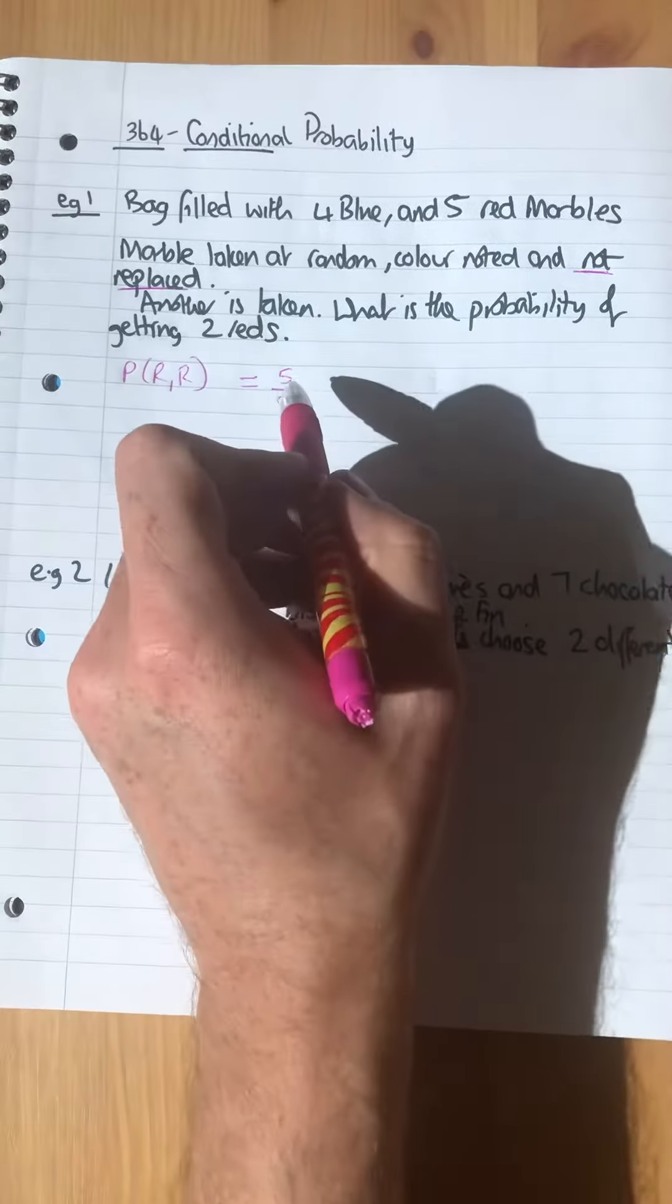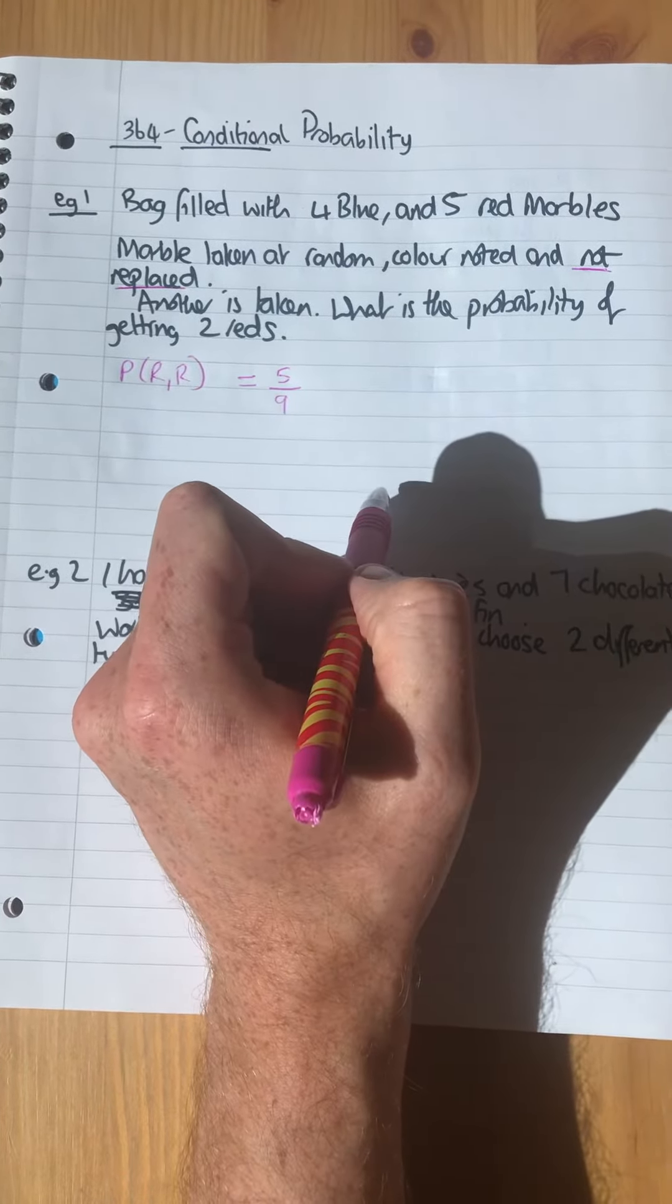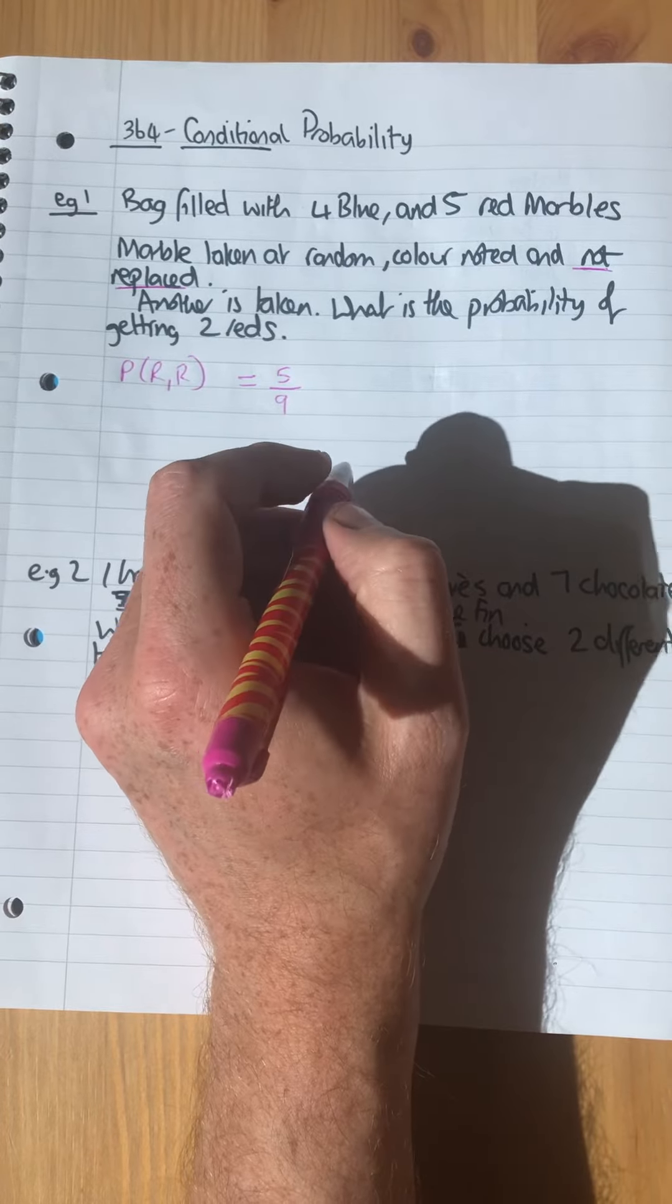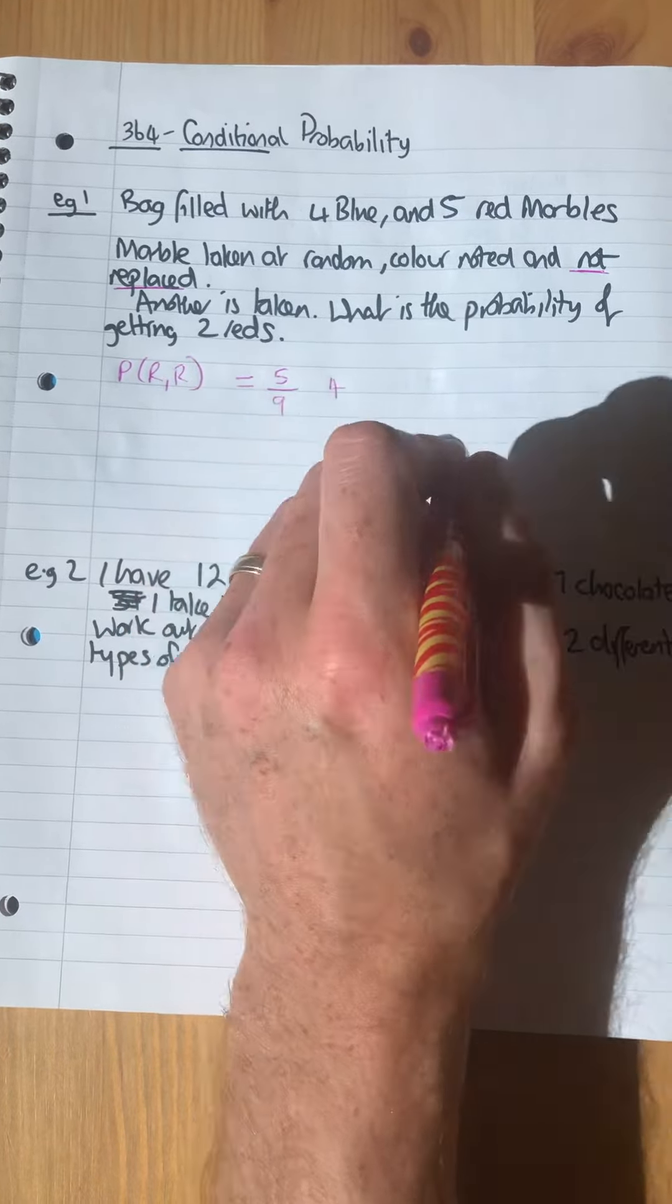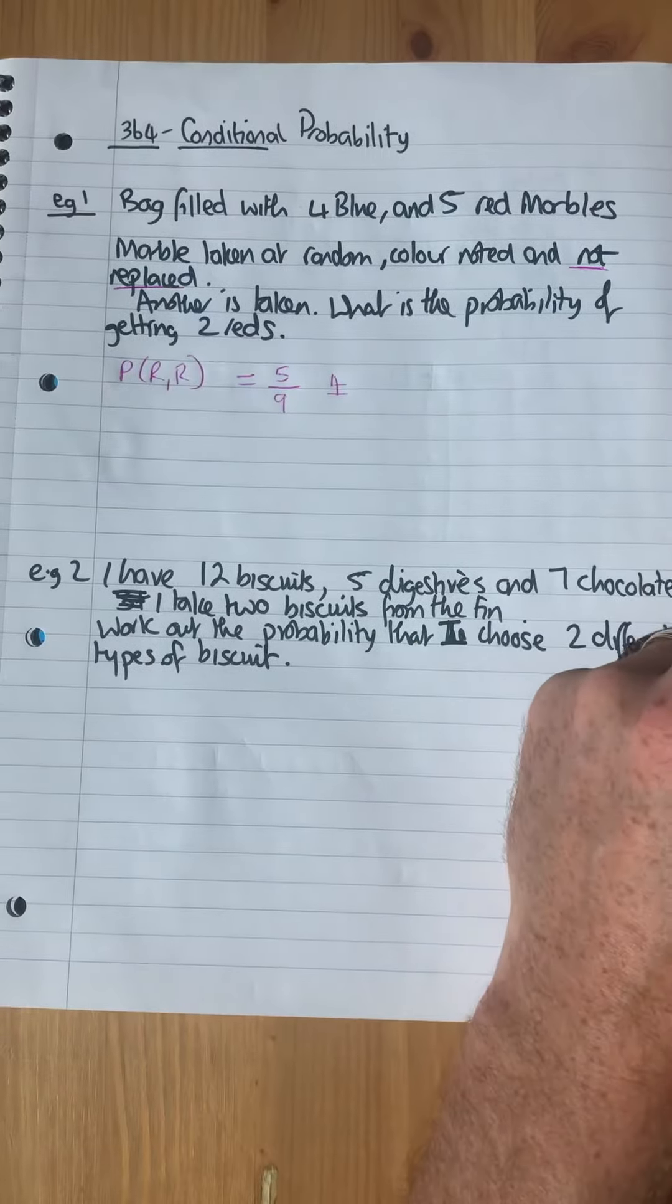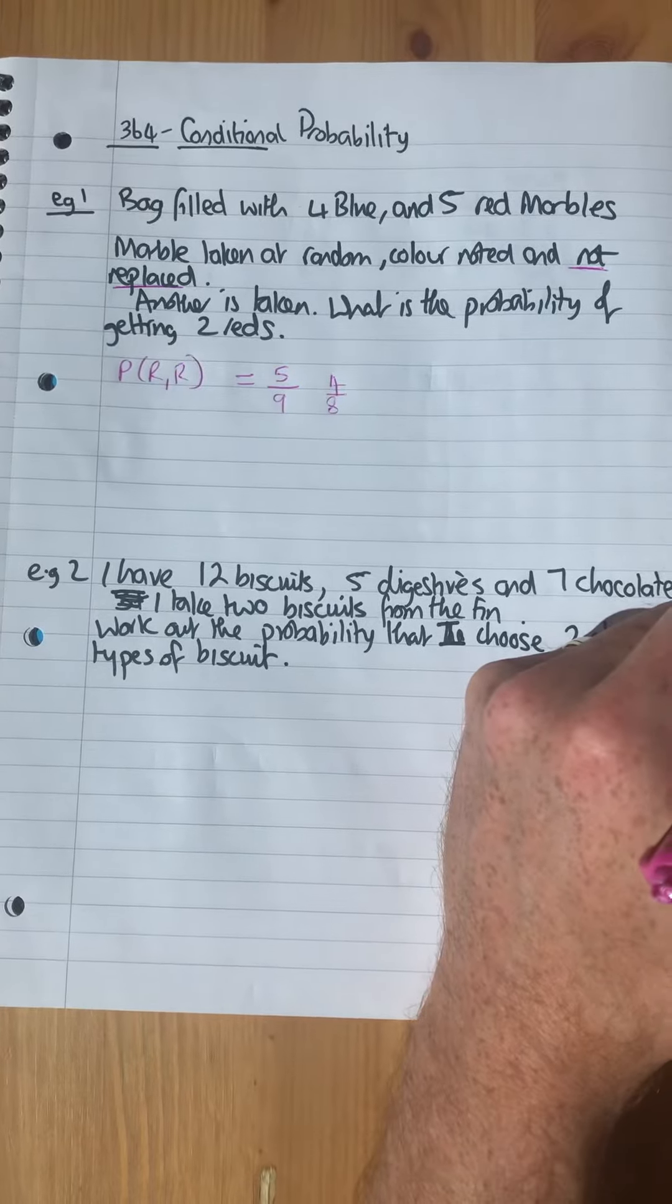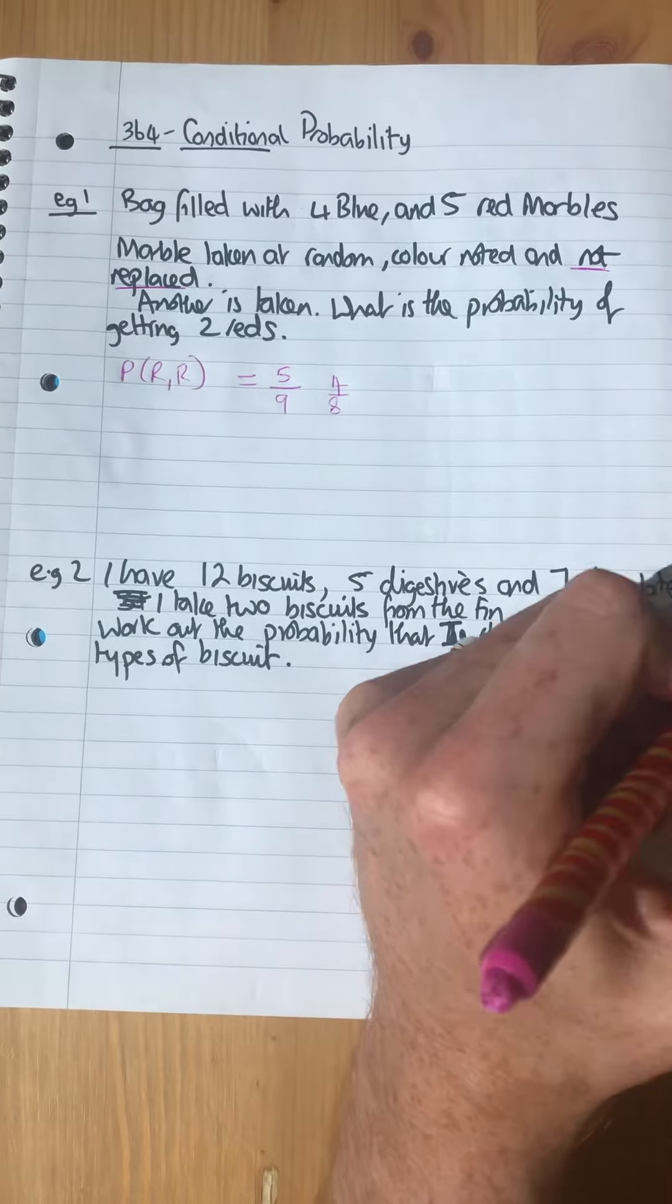So second time, this time you take that red out. You've now got one less red, so you've got four reds left. And because you've taken that one out, you've now gone down from nine to eight marbles. Then you need to times them because it's and.